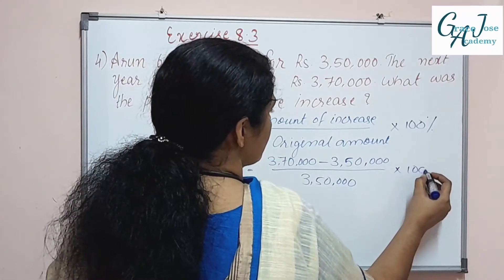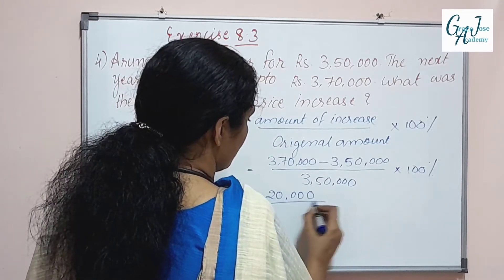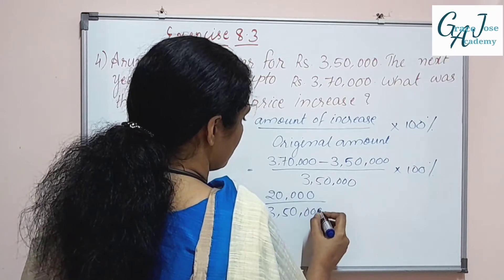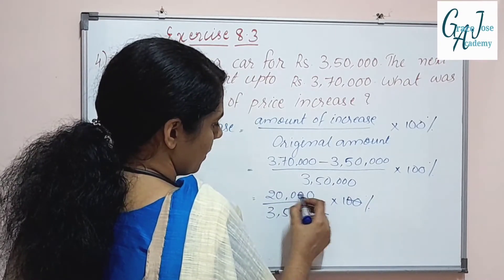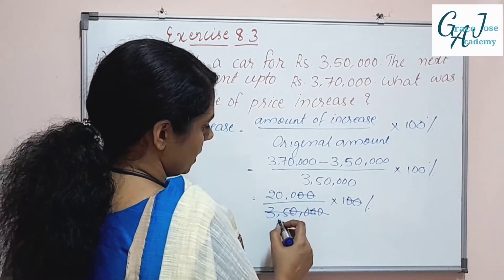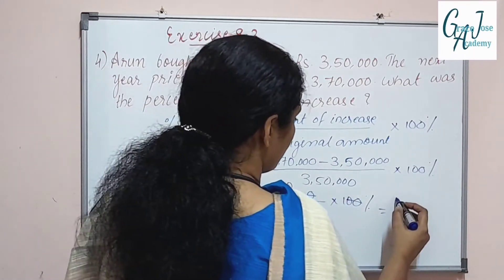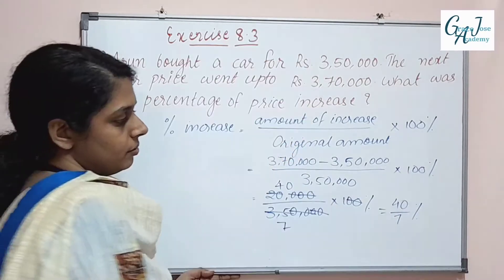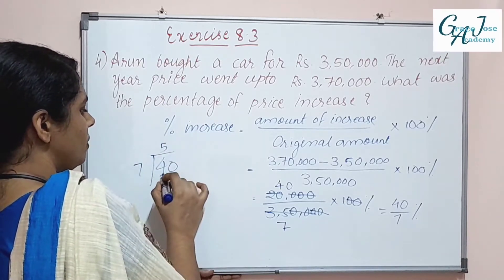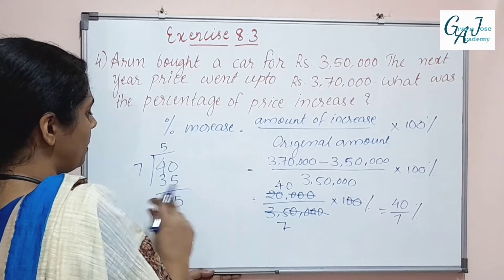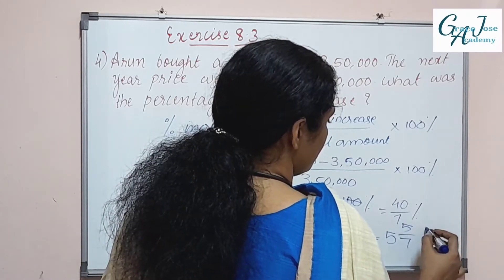That gives us 20,000 divided by 3,50,000, into 100%, which equals 40 by 7,000, simplifying to 5 by 7 percentage.